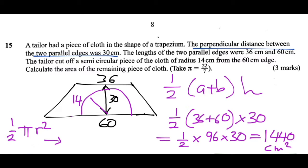So we have a half multiplied by 22 divided by 7, since that's what we're told to take pi to be.